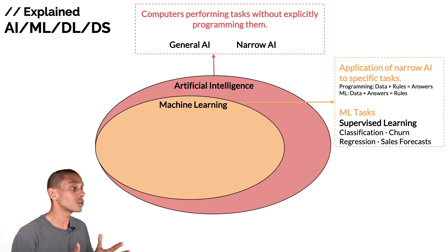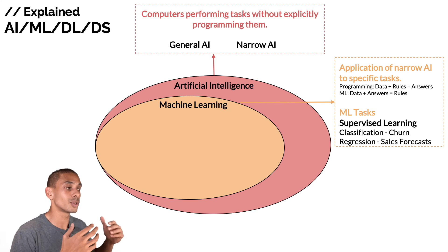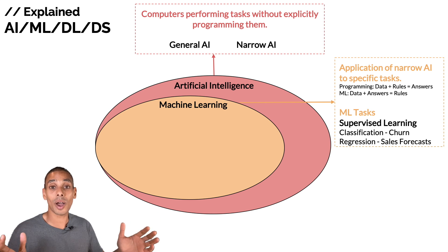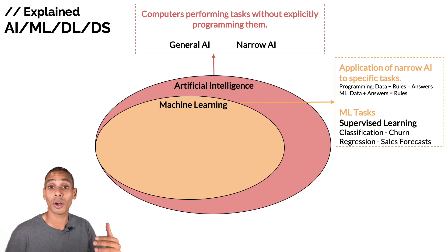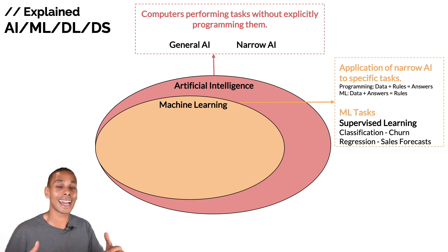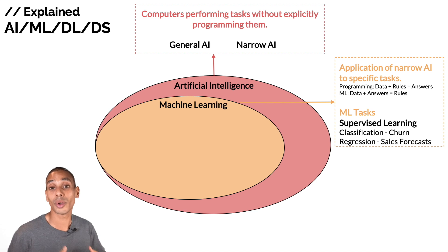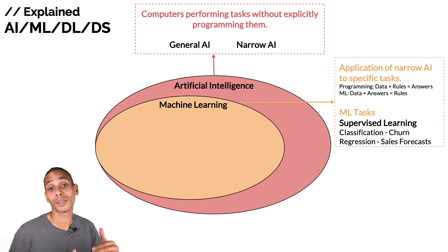Classification is all to do with grouping things into categories or labels. Say you had a big dataset on all the different types of pizzas you've liked and whether or not you liked them — yes or no. You could pass that data through a classification algorithm to help it learn which pizzas you like, so when you pass through a new list of ingredients, it can predict whether you would like that pizza or not.